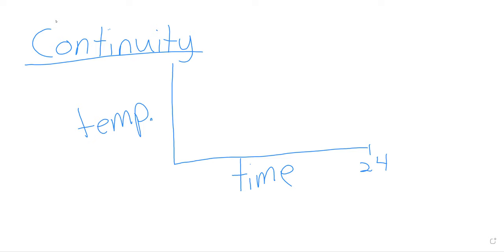Say I draw a graph that looks like this. It's kind of cool in the evening, in the night, and then it heats up to 105 degrees, if the weather forecast can be believed. Maybe I draw something like this, though.